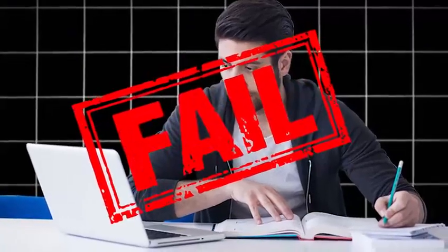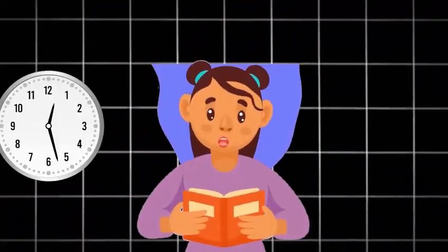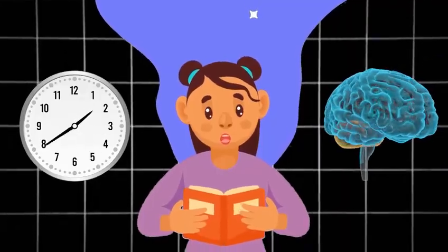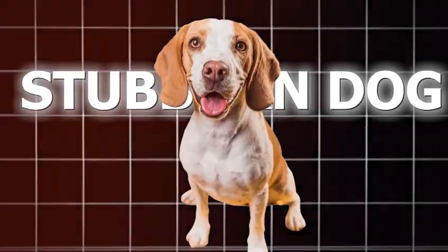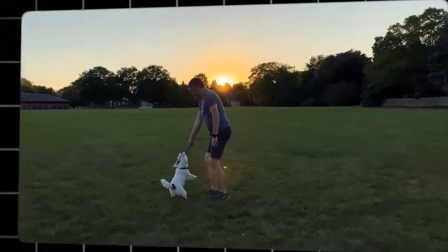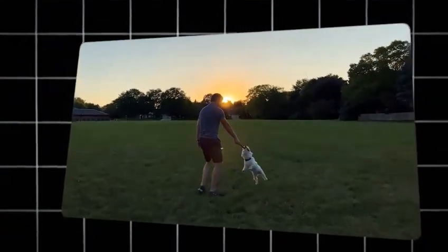Most people fail at studying because they do it passively. They highlight, reread, stare at notes for hours, and hope their brain absorbs the information like a sponge. But your brain is not a sponge. It's more like a stubborn dog. You need to train it correctly, or it will run wild and do whatever it wants.